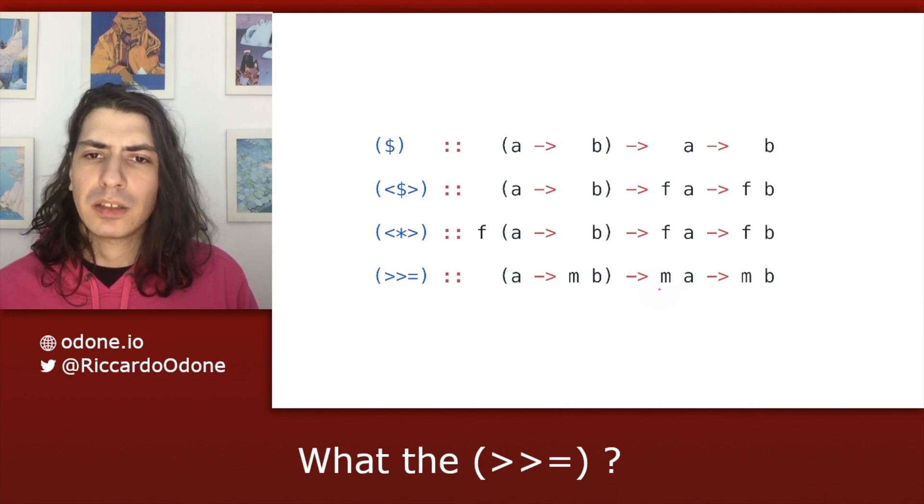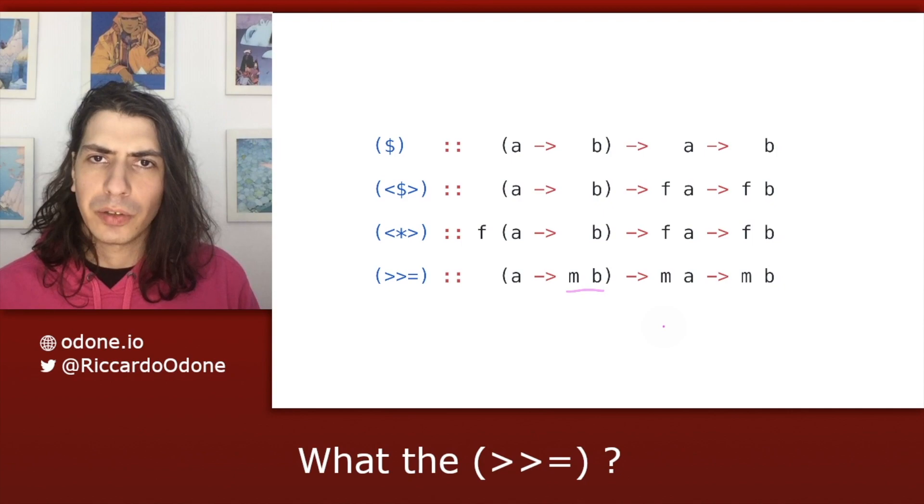In case of bind, the context is a monad. But the unique thing here for monad is that the step function is not wrapped up in the monadic context. It's the return value of the step function that is wrapped up in the monadic context m.